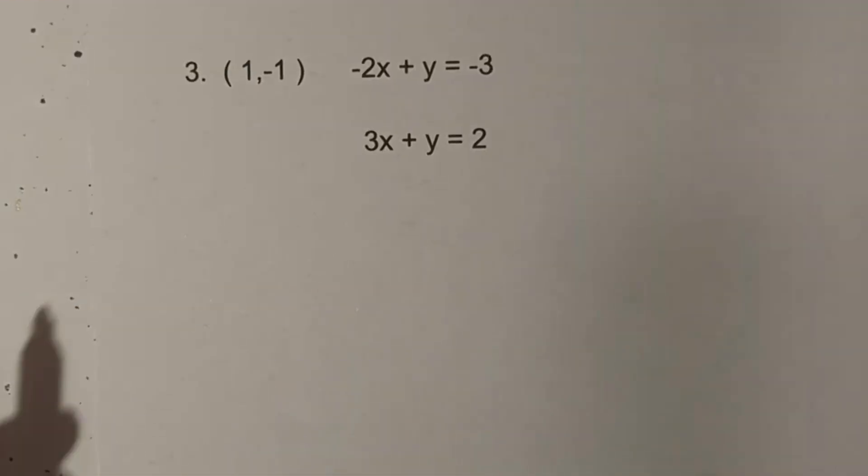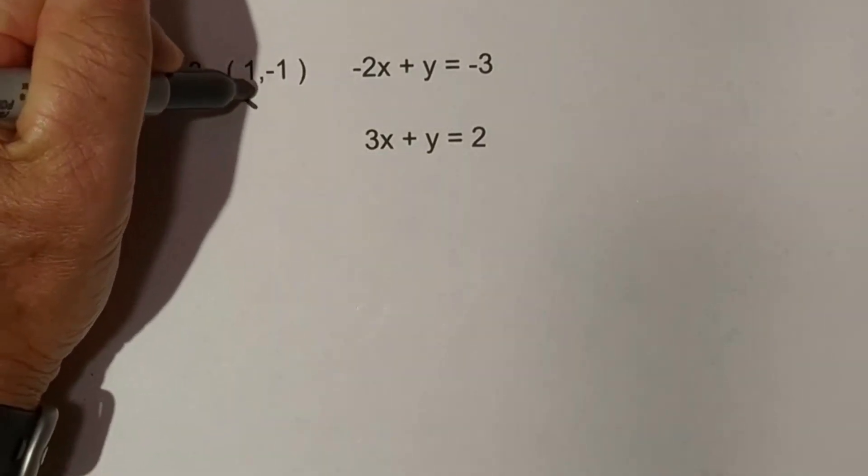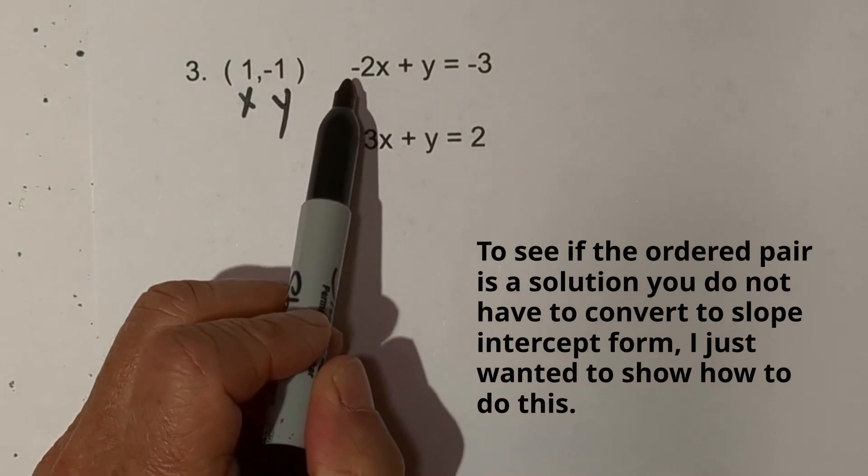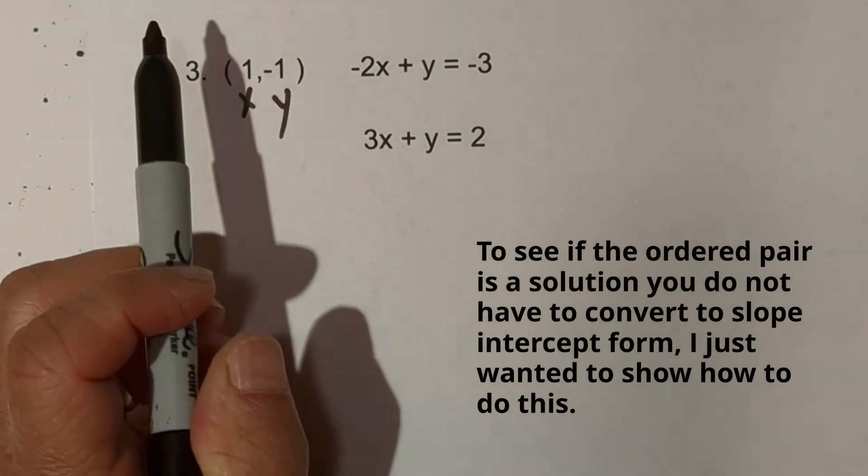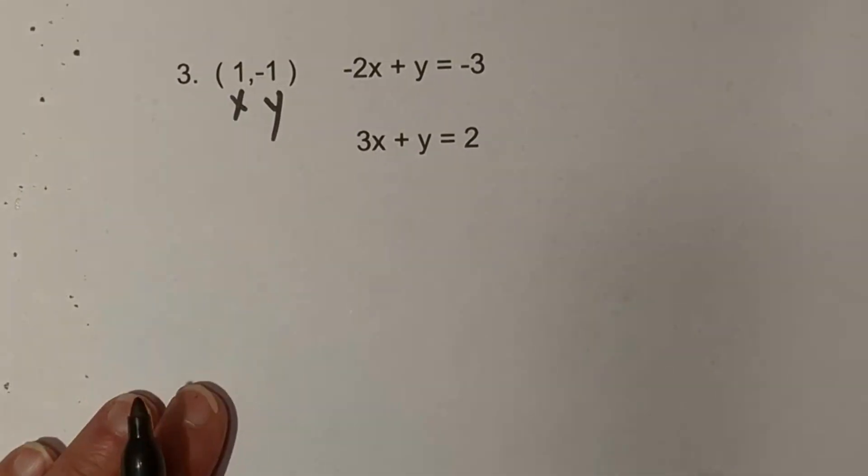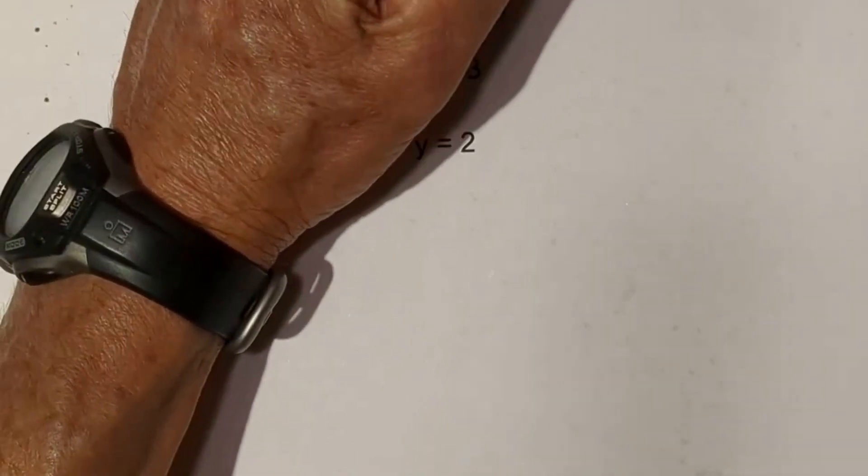Let's look at another solution. With this we have an ordered pair. Remember this is x and this is y. But when we look here we have -2x + y. Let's go ahead and switch it into this format, and that is y = mx + b.